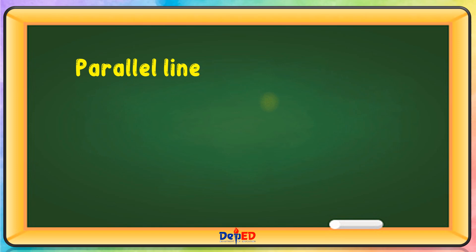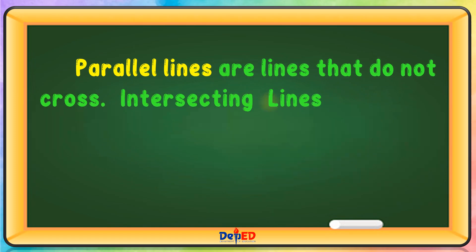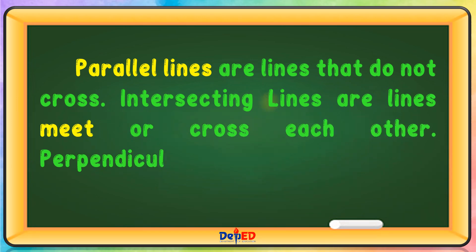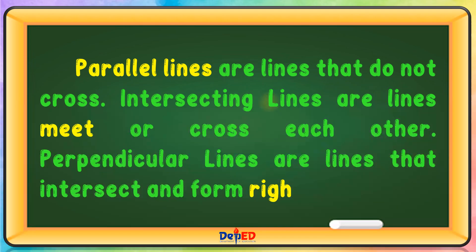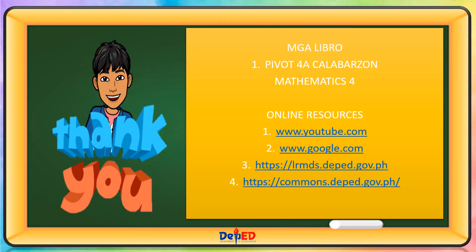Parallel lines are lines that do not cross. Intersecting lines are lines that meet or cross each other. Perpendicular lines are lines that intersect and form right angles. Thank you for watching. Till our next mathematics lesson, goodbye!